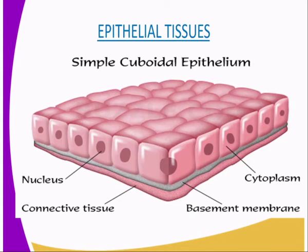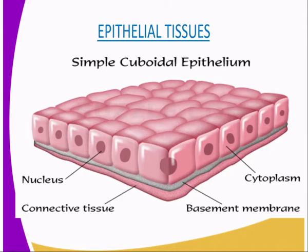Our first tissue that we are going to observe is the epithelial tissues. On our diagram, this is a symbol representation of a cuboidal epithelium — this one is in the form of a cuboid. As you can see, our epithelial tissues here have got the nucleus. On the lower side there is connective tissue, and on our right side there is the basement membrane. We still have the cytoplasm.